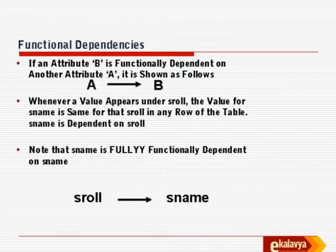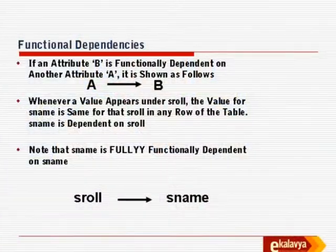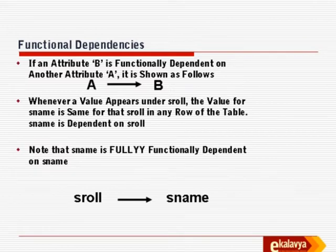What is full functional dependency? The difference between functional dependency and full functional dependency is that full dependency means the dependency is only on this attribute — there is no other dependency. When you have a single attribute as key and a single attribute as non-key, that dependency is also a full functional dependency because there is no sub-part of A on which B can depend. So name is fully functionally dependent on S_roll — S_name is determined fully by roll number; nothing else is required.